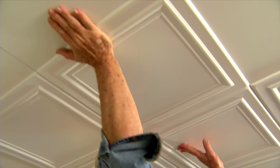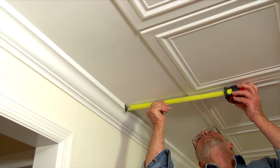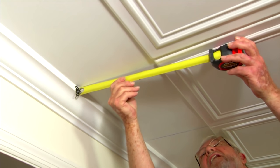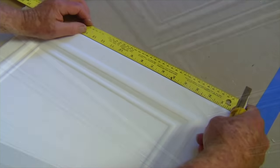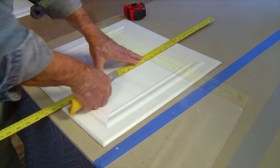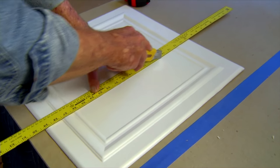To cut and fit the tiles around the perimeter of the room, I measure the distance from the last full tile to the wall, or in this case the crown molding. I make two measurements since the distances may not be the same. Then transfer those measurements to a tile, align a straight edge with the marks, and cut through the tile using a utility knife.